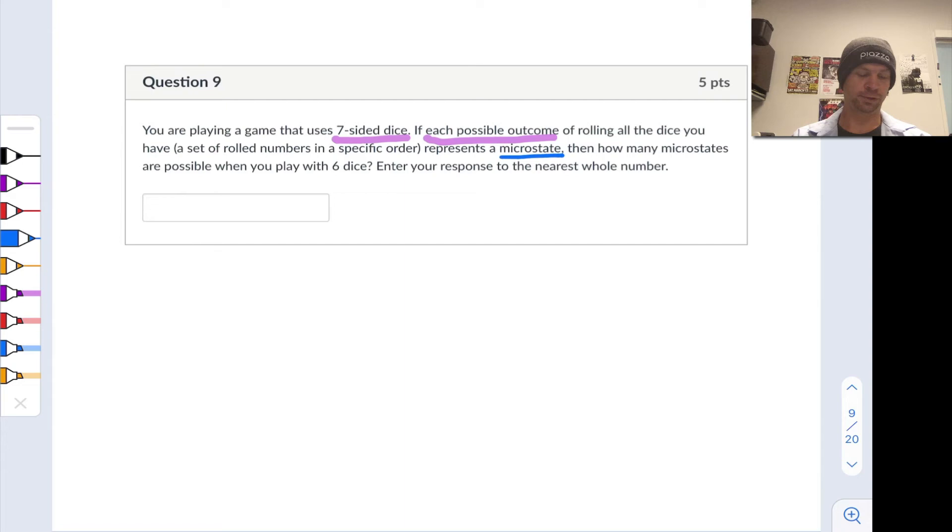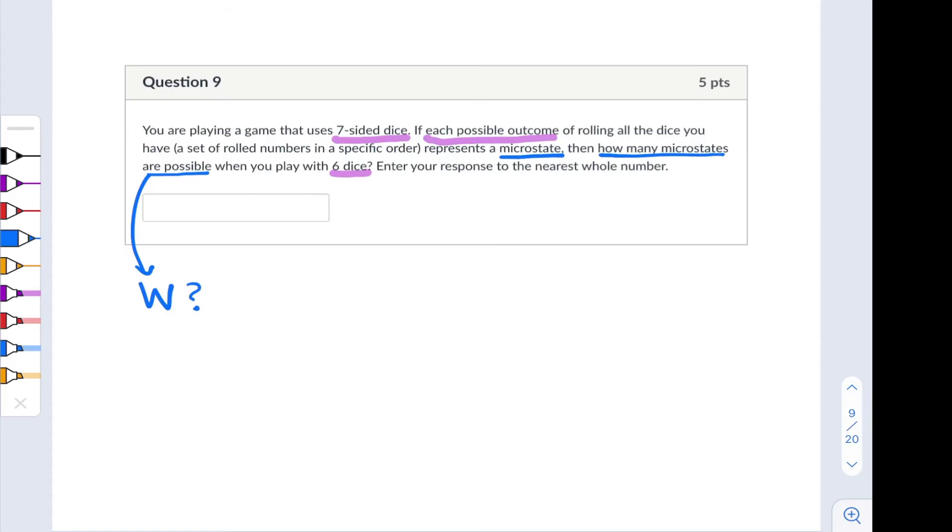Now, we want to know, we're playing with six dice. We want to know how many microstates are possible. Now, what is this quantity? How many microstates are possible? Well, from the statistical definition of entropy, this quantity corresponds to W. You sometimes hear it called the likelihood of the corresponding macro state, that kind of thing. We're interested in figuring out the value of W for this game that we're playing. Now, if I've got a seven-sided die, there are seven possible outcomes. So let me just note here, we've got seven outcomes per die.